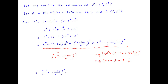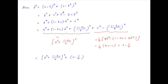Therefore d² is equal to (t² + (1 − 2c)/2)² + (c − 1/4). Now, (c − 1/4) is a constant, and (t² + (1 − 2c)/2)² is always greater than or equal to 0. For d to be a minimum, this first term will need to be equal to 0.